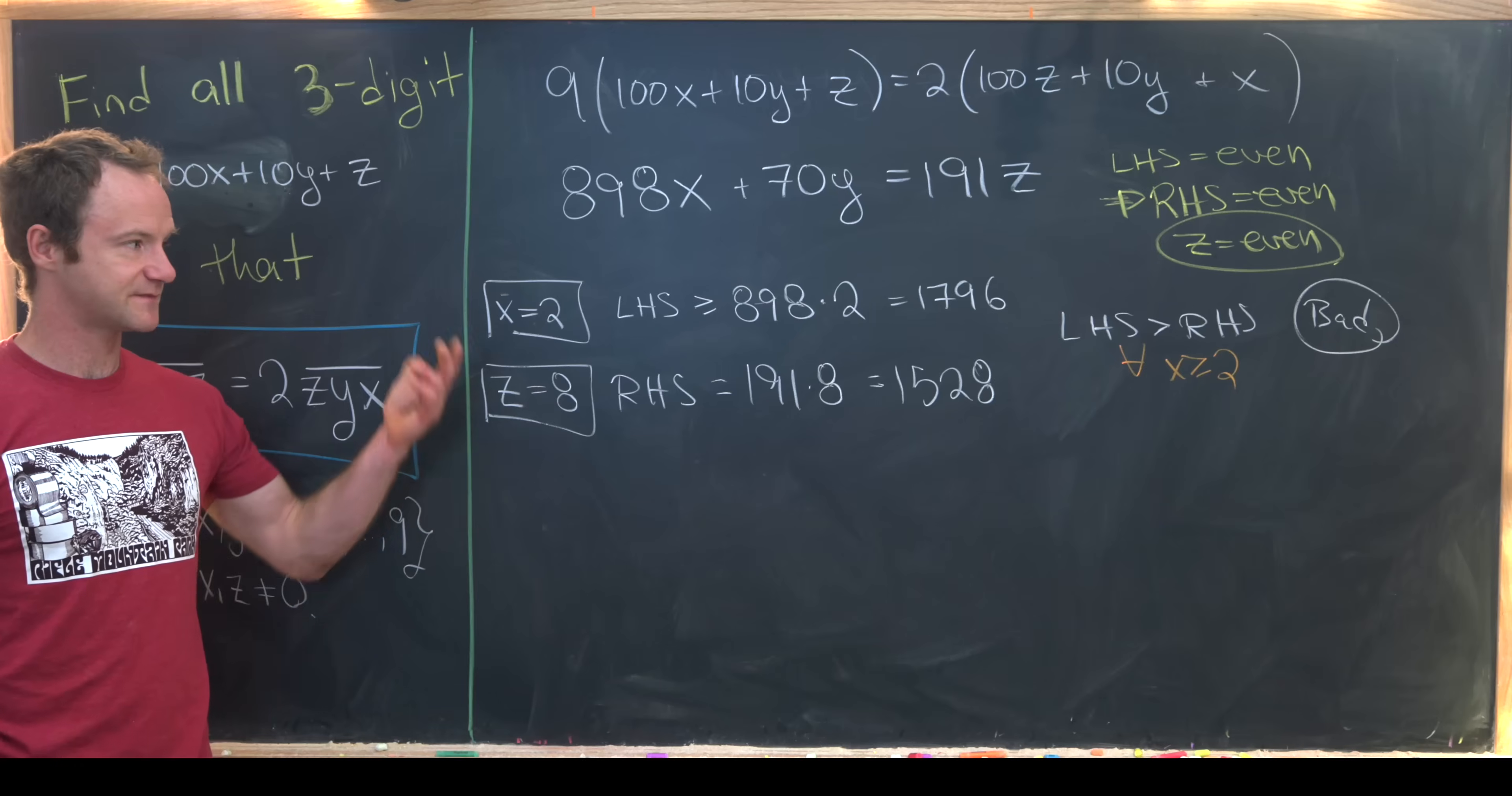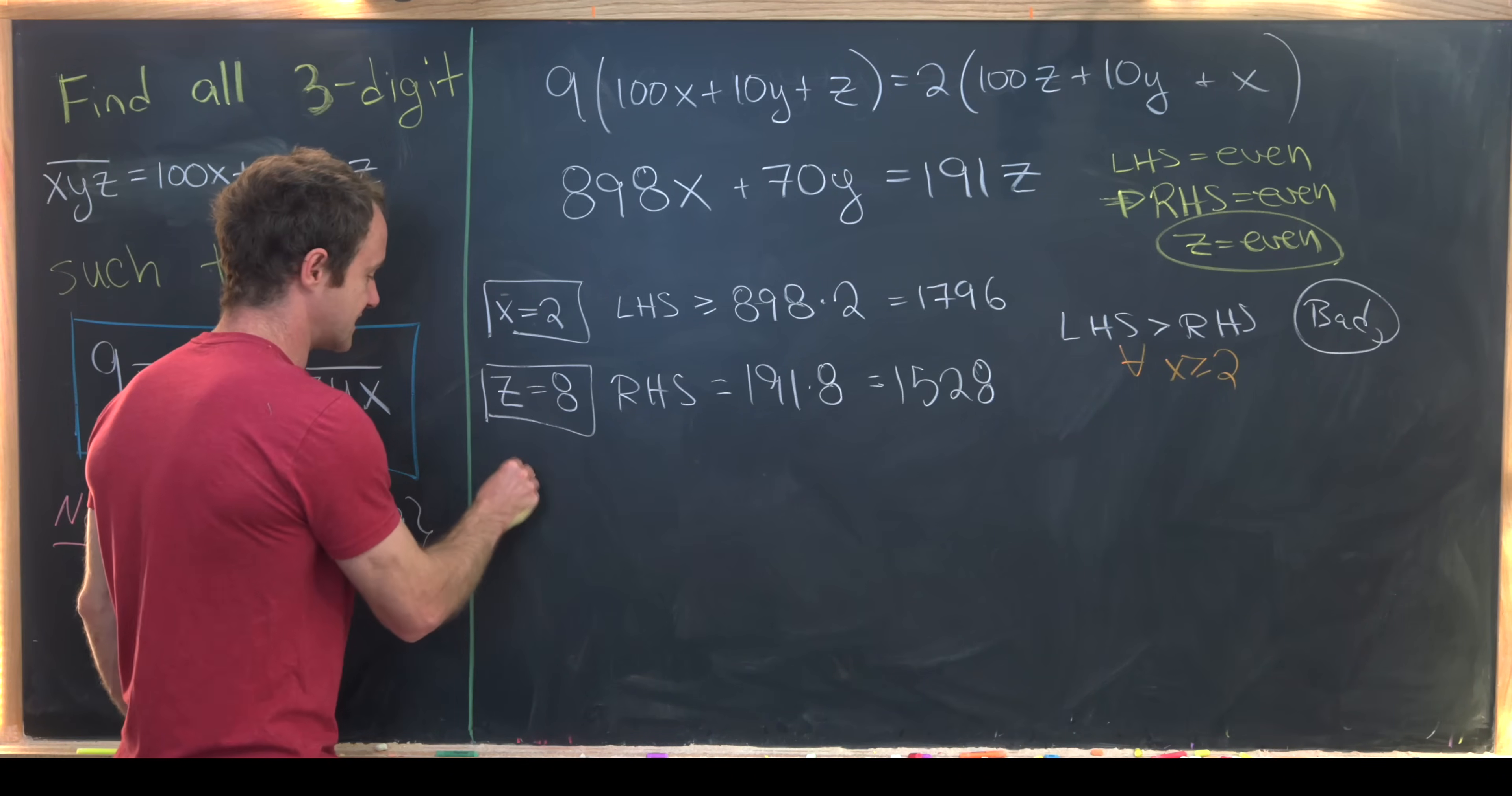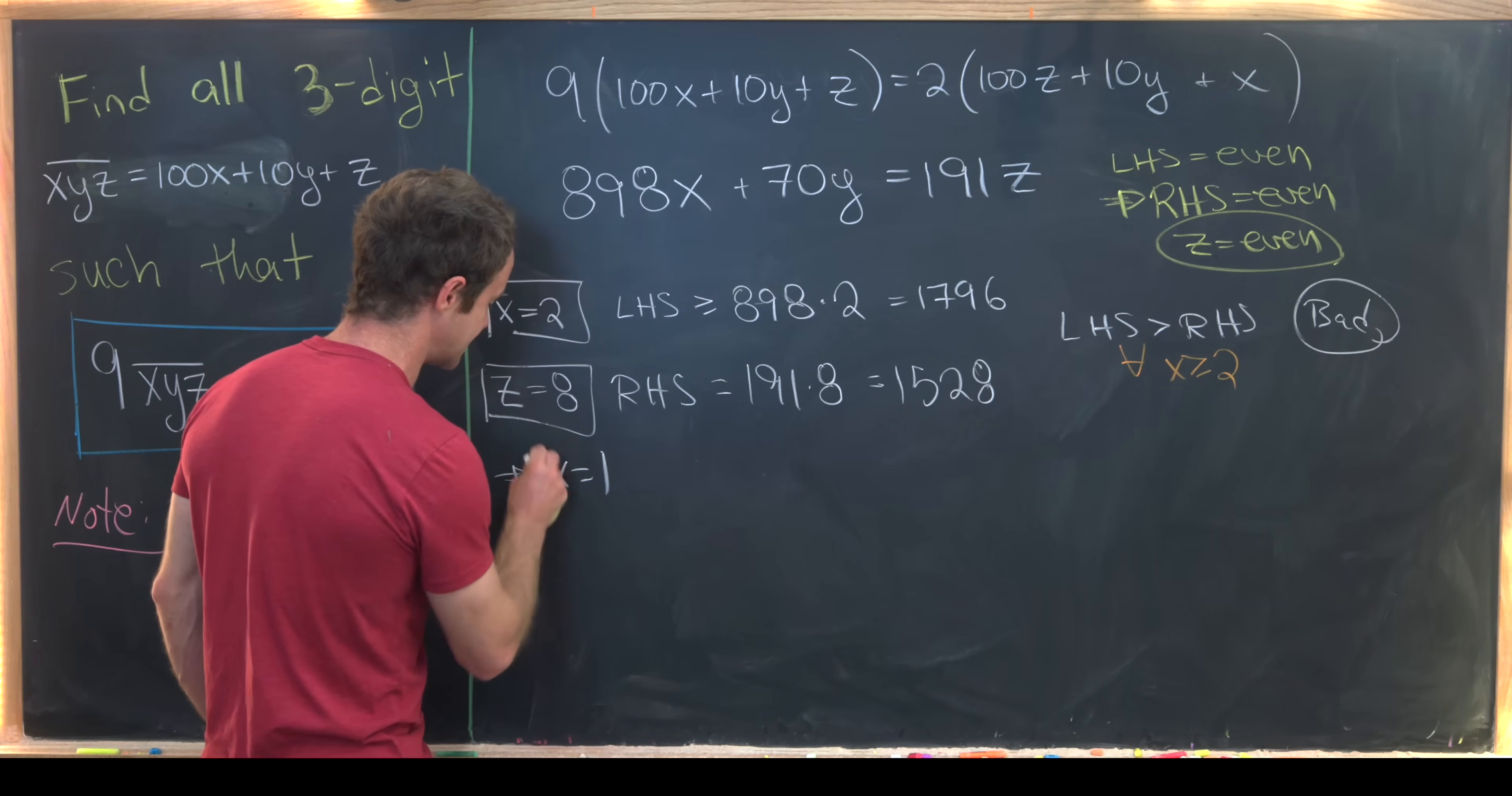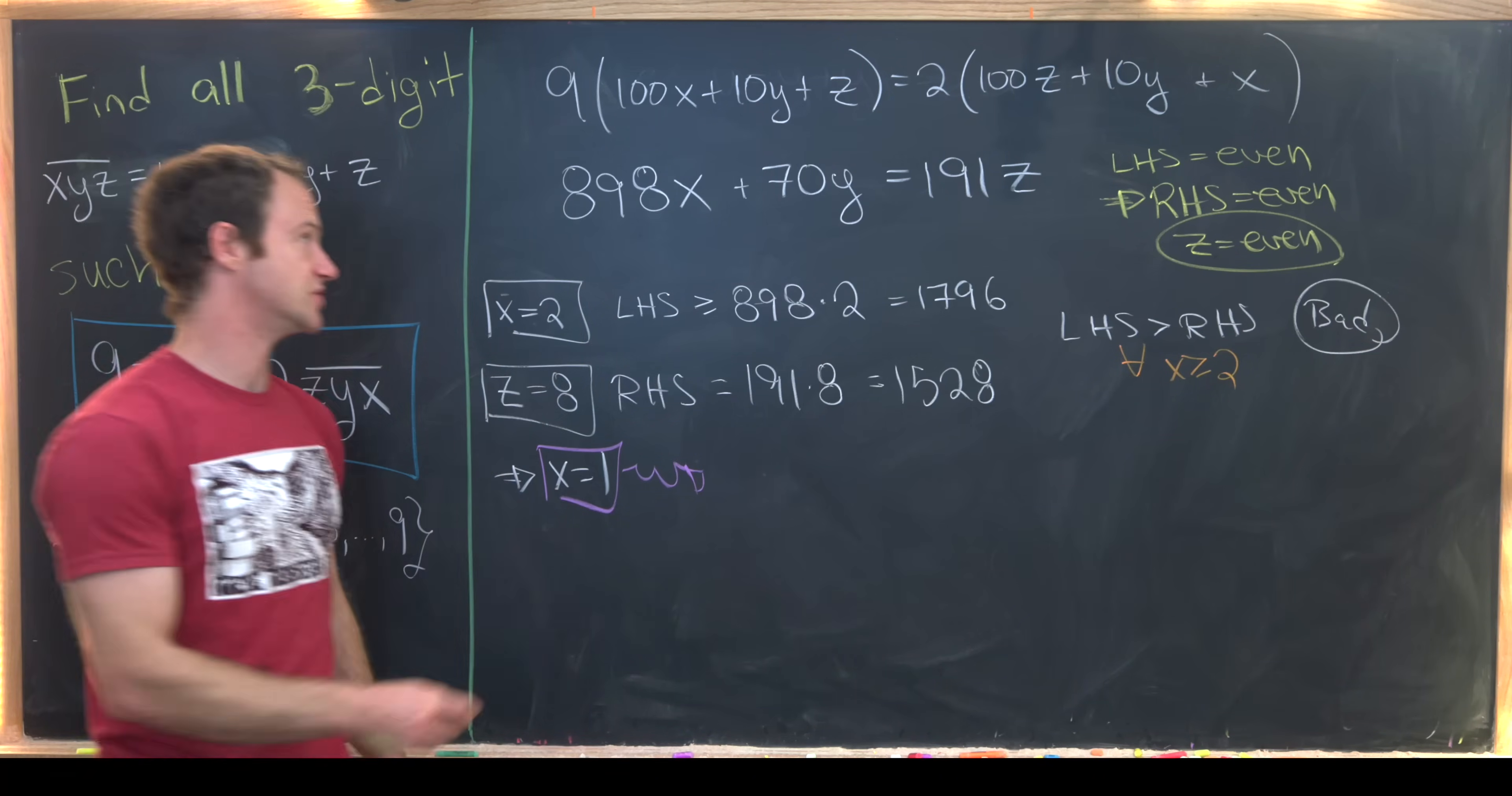Okay well what does that tell us? x is not allowed to be bigger than or equal to 2 which tells us that indeed x must be equal to 1. But if we know that x has got to be equal to 1 then that's going to start simplifying this equation.